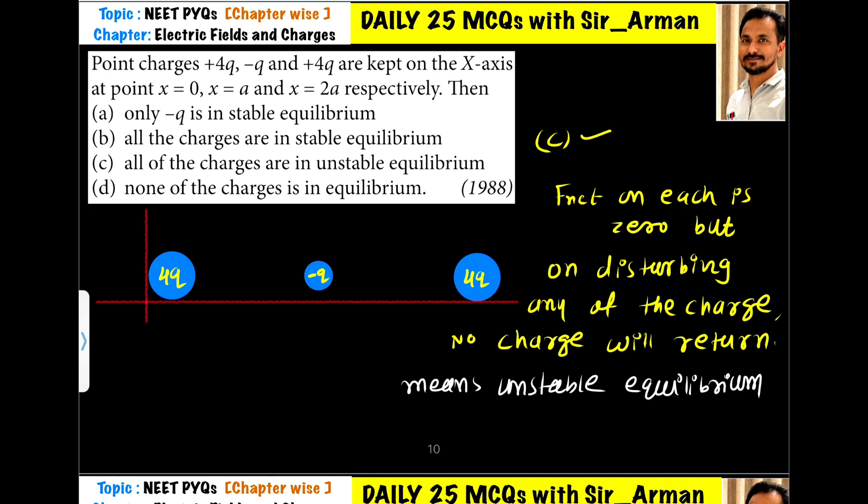Now, what is equilibrium? Equilibrium means net force acting on the system is zero. So if you find force on any of the charges by using Coulomb's law, the net force acting on each charge is zero, means the system is in equilibrium. But if you try to displace any of the charges, then the equilibrium will get disturbed. When the equilibrium gets disturbed, then in that case we can say the system is in unstable equilibrium.